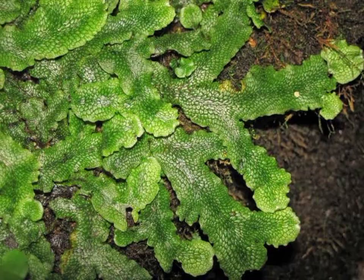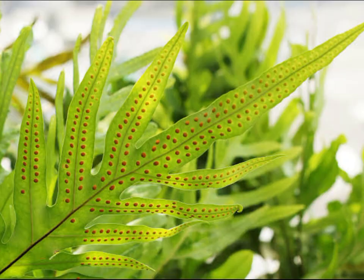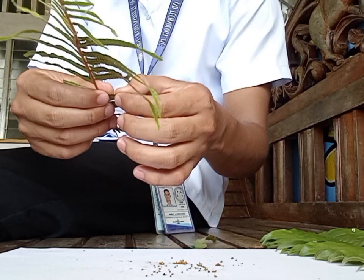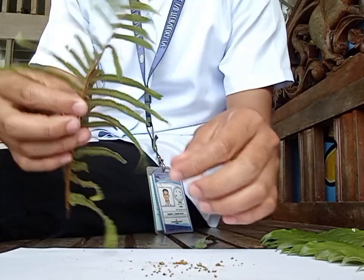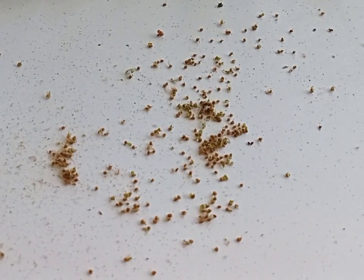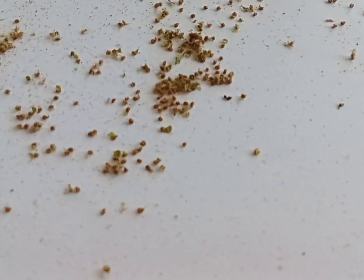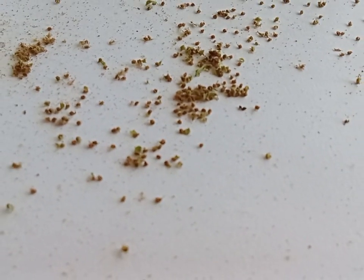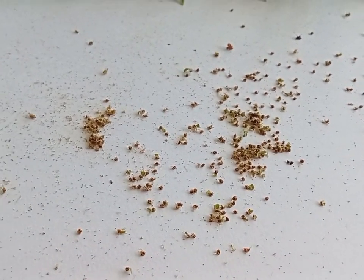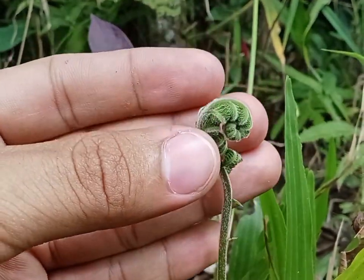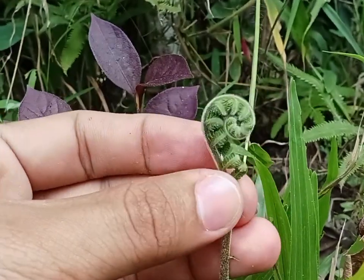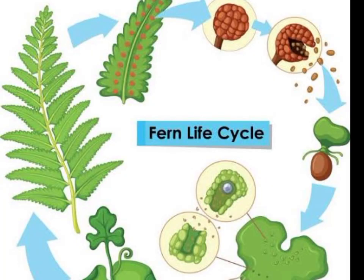Ferns and mosses reproduce using tiny unicellular spores produced in specialized structures and released into the environment. When conditions are favorable, the spores germinate and grow into new plants. Ferns reproduce through a process called alternation of generations, which involves both sexual and asexual reproduction.